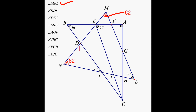That overlaps, so I am going to write my 88 right here. This angle is 88. If this is 88, then angle EDI has to be 180 minus 88, which is 92.